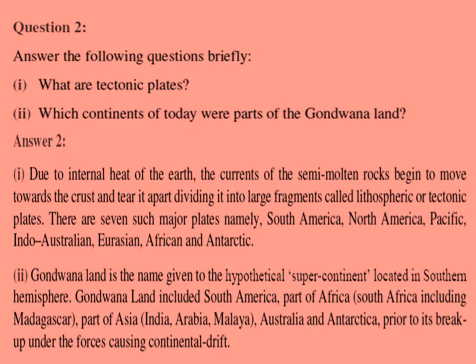Second question: which continents of today were parts of Gondwana land? The answer is — Gondwana land is the name given to the hypothetical supercontinent located in the southern hemisphere. Gondwana land included South America, part of Africa, South Africa including Madagascar, part of Asia, India, Arabia, Malaya, Australia and Antarctica.